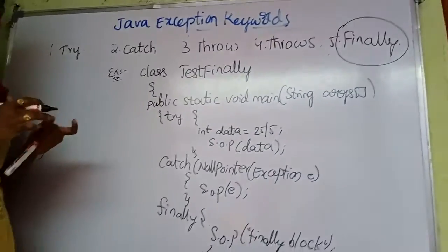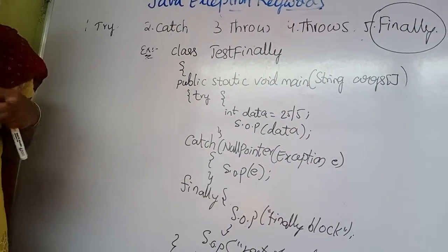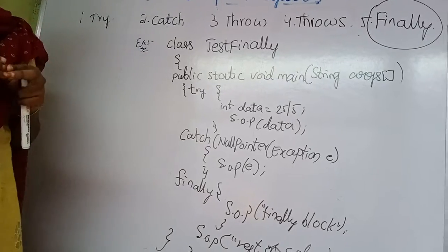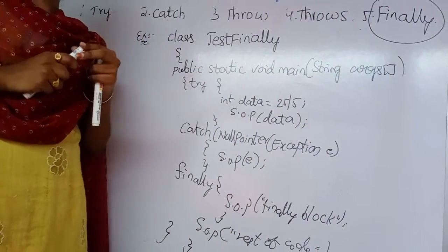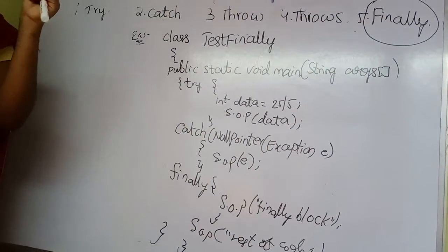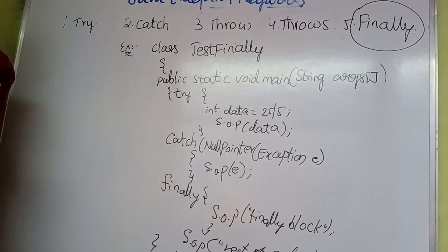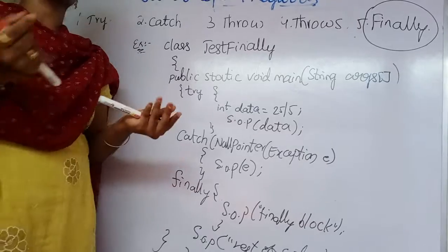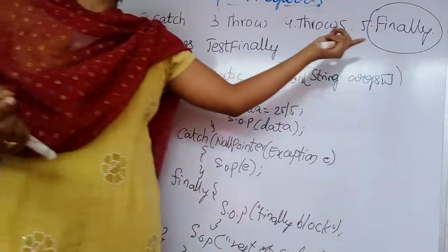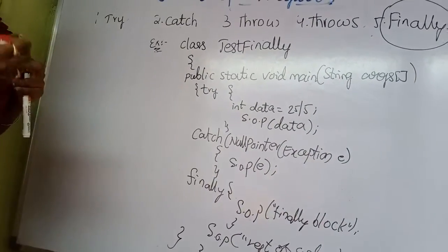Next concept is the finally keyword. The main use of the finally keyword is that it will execute the important code. Whatever code we are writing in a program, the important code should be written in the finally block. By using this finally keyword, it will execute whether an exception has occurred or not in the method. It also specifies whether the method has an exception or not.